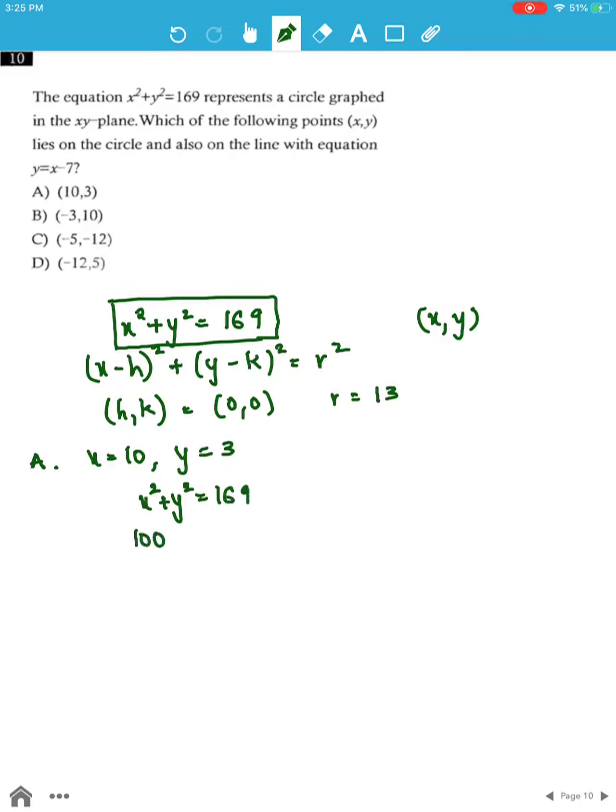we get 100 plus 9 which equals 109, not equal to 169. Because it does not satisfy this equation, this point cannot lie on the circle.